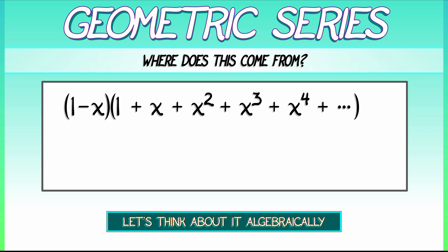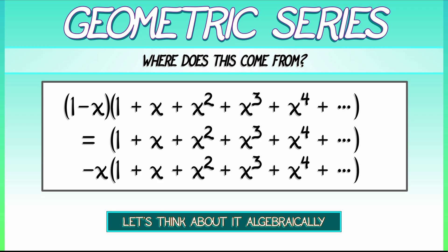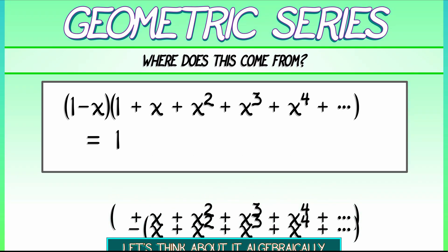I'm going to distribute that multiplication. I get 1 times the geometric series, then minus x times the geometric series. Multiplying through by minus x, I'm going to keep the minus sign out in front, distribute the x that shifts all of the powers up by 1. Subtracting it from the original geometric series gives me simply 1.